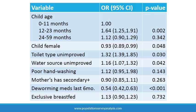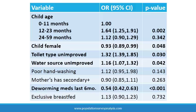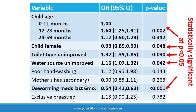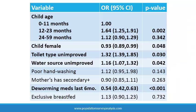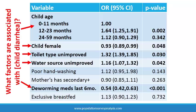In general explanatory modeling, we interpret all of the variables that remain statistically significant in the model. A general explanatory model is used to answer the question: what factors are associated with the outcome? This is different from other modeling approaches, for example hypothesis test modeling, which we will review in a separate lecture.